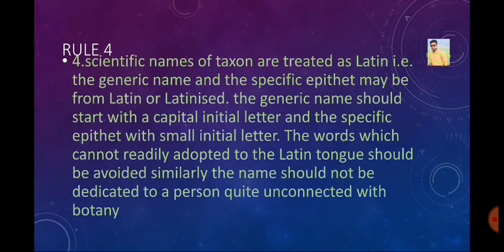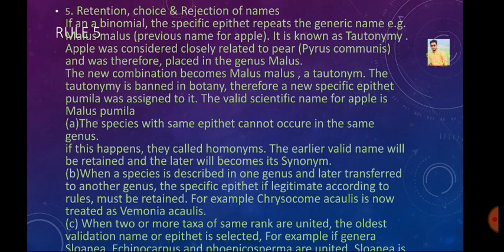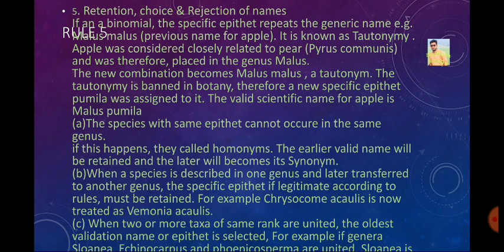Rule number 5 concerns retention and reduction of names. If the binomial specific epithet repeats the generic name, that is a problem called a tautonym. For example, Malus malus was a previous binomial for apple. Apple was closely related to pear and was placed in the same genus as Pyrus malus.